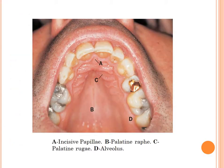Here we can see the incisive papilla, the palatine raphe, the palatine rugae, and the alveolus.